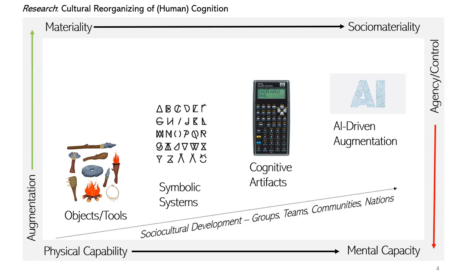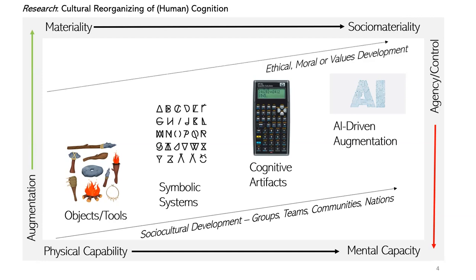If you think about our socio-cultural development, as we have come up with these different kinds of tools, we have developed from groups to teams to communities and nations. Our ethical and moral values have also co-evolved with the technology we develop. AI in some ways introduces something very new in terms of offloading our capacity for decision-making. That's where we need to rethink what our ethics, morals, and values are going to be as a society as AI becomes part of even more things.